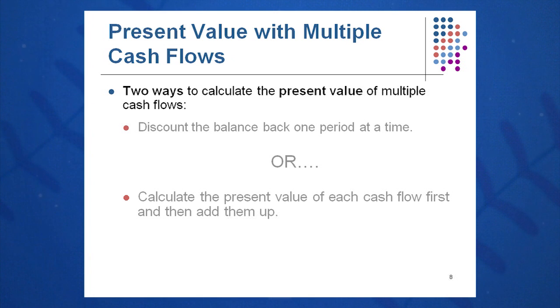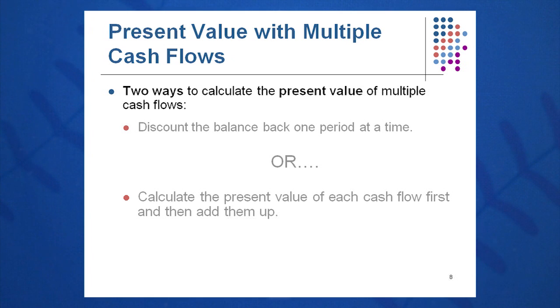If the amounts are the same, we can use the present value annuity formula. But if they are not the same, we must go back to session 5 and use the present value / future value equation: PV equals FV divided by 1 plus R to the T.